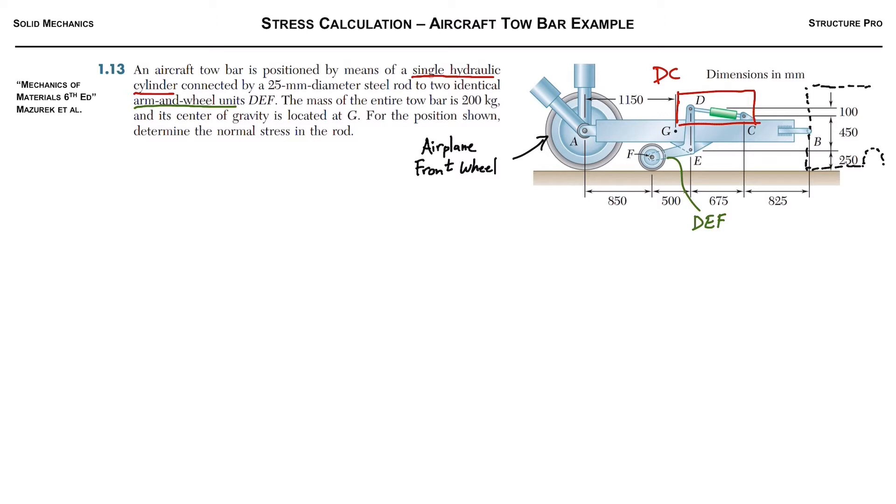So we're gonna use that, the weight of the tow bar, draw some free body diagrams and figure out the stress in that little green rod there. So first step: free body diagrams. You don't always know which one to do.